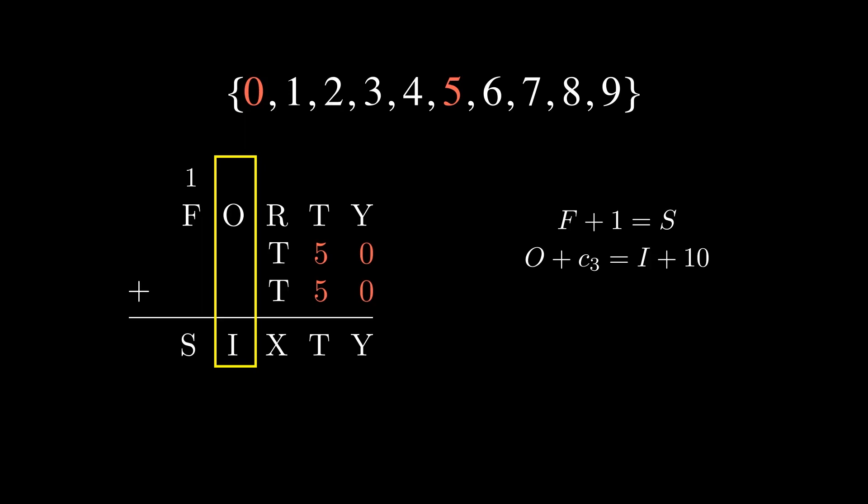As there are three terms in the third column, carry 3 can either be 0, 1, or 2. Let's consider each of these cases one by one. If carry 3 was 0, then we would run into the same problem as before. O cannot equal I. If carry 3 was 1, our equation would then force O to equal 9 and I to equal 0. This doesn't work because we already set N equal to 0. By process of elimination, carry 3 must be 2. Moreover, O must equal 9 since setting it equal to 8 would create the same problem of two letters being 0. Therefore, O must be 9 and I must be 1. Let's fill this in as well.